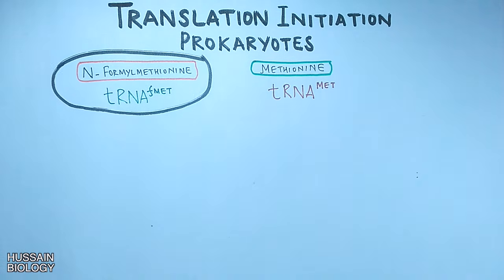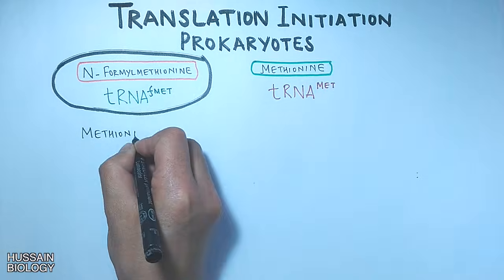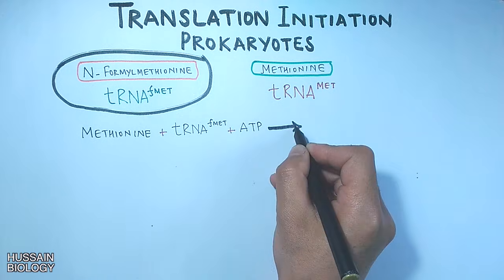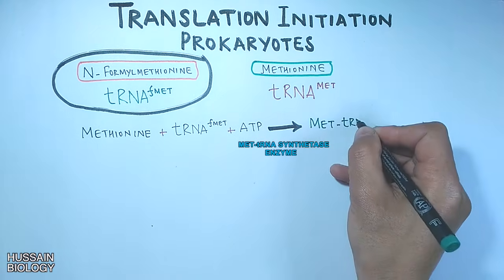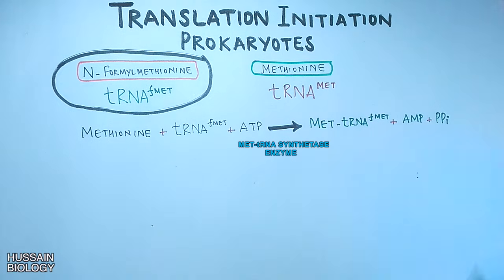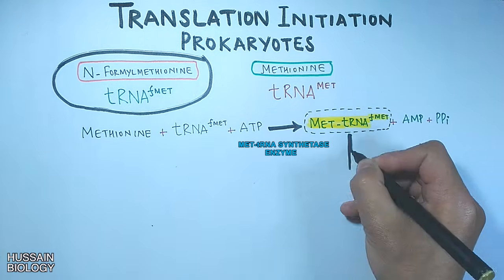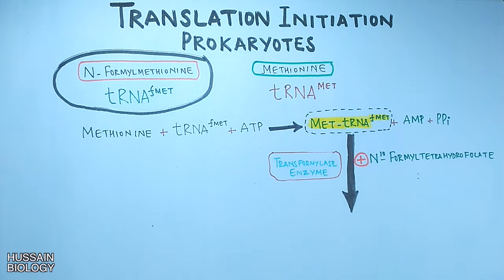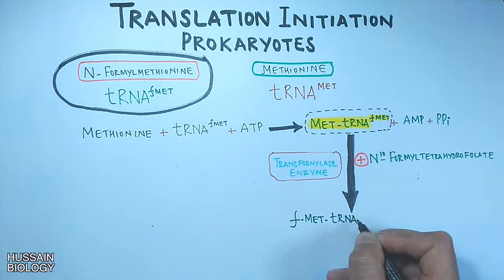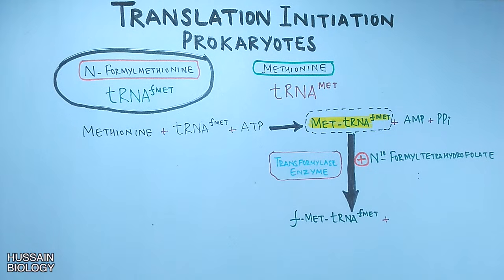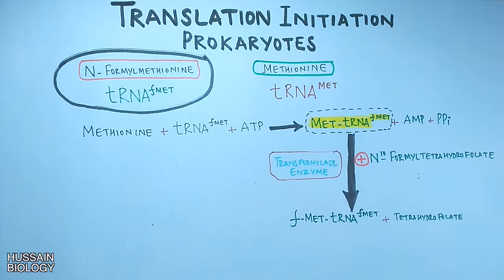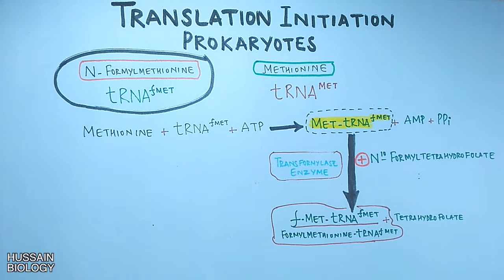Let's see how fMet-tRNA is formed. First, methionine is attached to tRNA-fMet by methionine-tRNA synthetase in the presence of ATP, giving methionine-tRNA-fMet plus AMP plus PPi. In the next reaction, methionine-tRNA-fMet reacts with N-formyl tetrahydrofolate in the presence of transformylase enzyme, yielding fMet-tRNA-fMet and tetrahydrofolate.